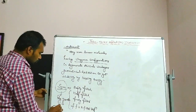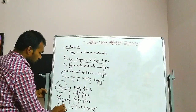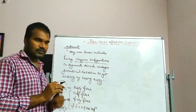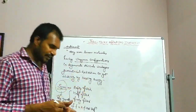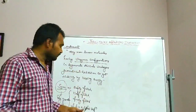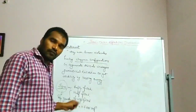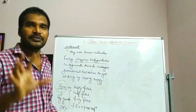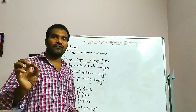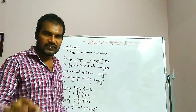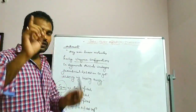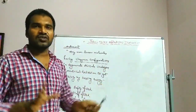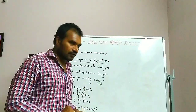Jahn-Teller distortion will not occur in the case of symmetrical molecules. However, if any central metal ion does not have empty, half-filled, or fully filled configuration, then we call it an unsymmetrical configuration. In the case of complexes with unsymmetrical configurations, they are unstable, so some kind of distortion happens to achieve stability.